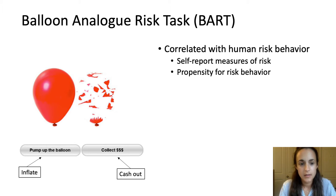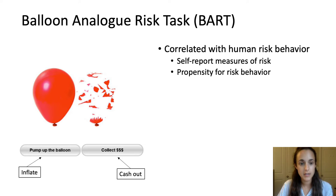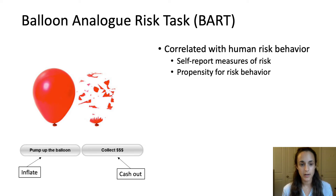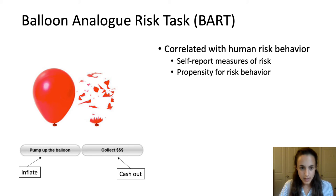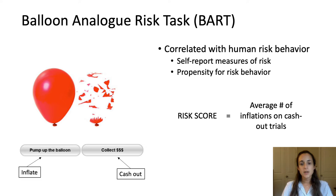To find out, we developed a task based on the standardized human risk task: the Balloon Analog Risk Task. This task has been correlated with human risk behavior and it's very simple. Players just see a balloon on their screen and have the option to inflate it, earning something like five cents per inflation, or they can cash out by clicking the cash-out button, putting all earned money into a permanent bank. Sometimes the balloon pops while inflating, and when that happens they lose all earnings accrued up until that point in the trial.